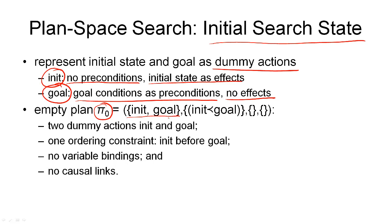The empty plan also has one ordering constraint, namely that init must come before goal. We have no variable bindings initially, because there will be no variables in the initial state or in the goal — they are all fully ground. And finally, there will be no causal links between any of the propositions in the initial state or the goal. That is the empty plan, the initial search state we'll use to start our search.